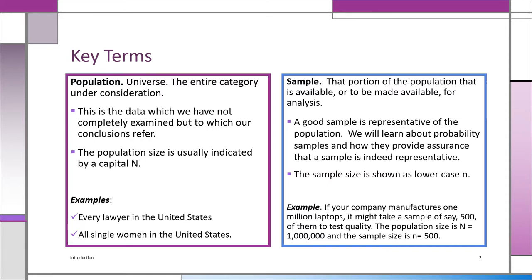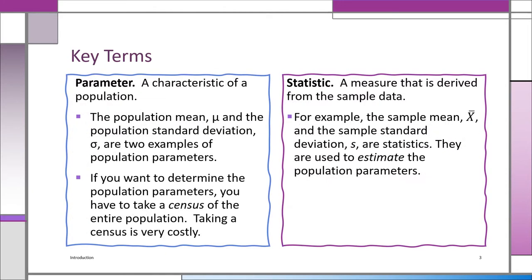Any kind of measure that comes out of a population — a characteristic of the population — we call that a parameter. Generally, we use a Greek letter. For the population mean, for example, we use the Greek letter mu. You'll see the mu on the slide — it looks a little bit like a U. It's a Greek letter; we call it mu.